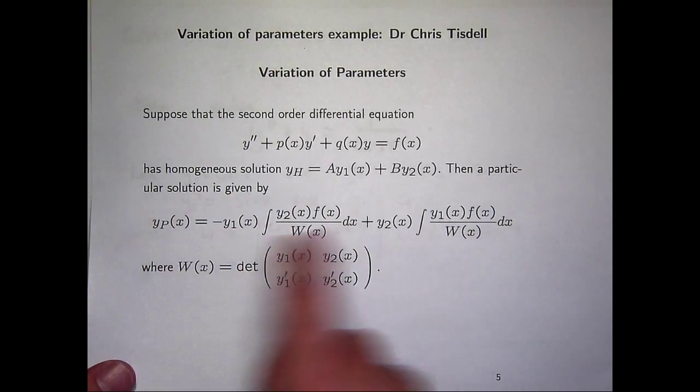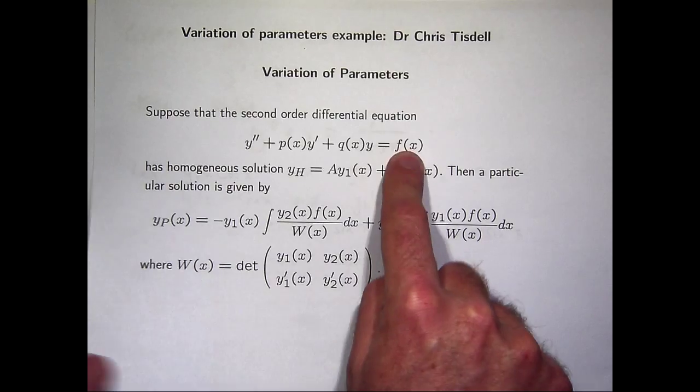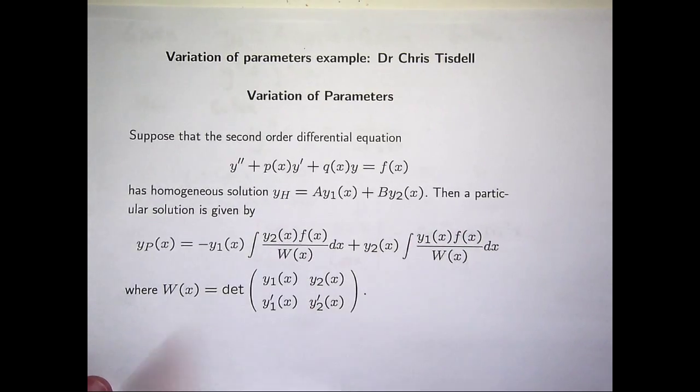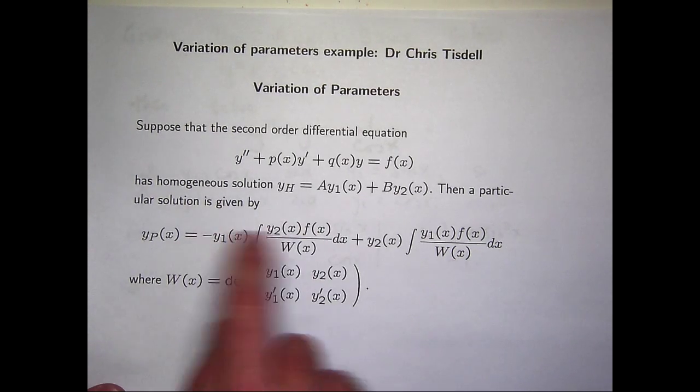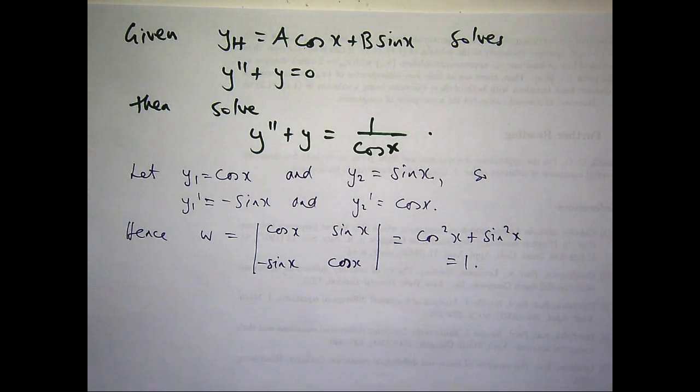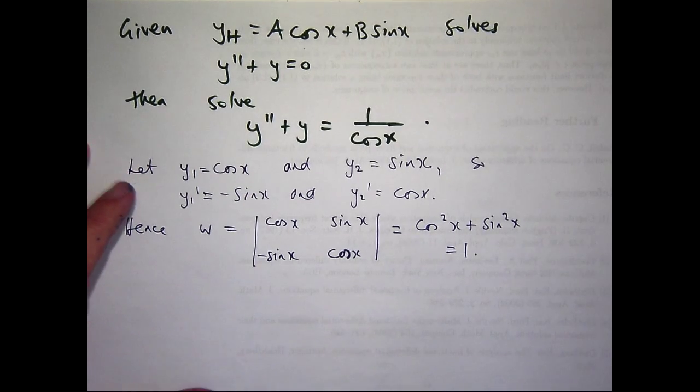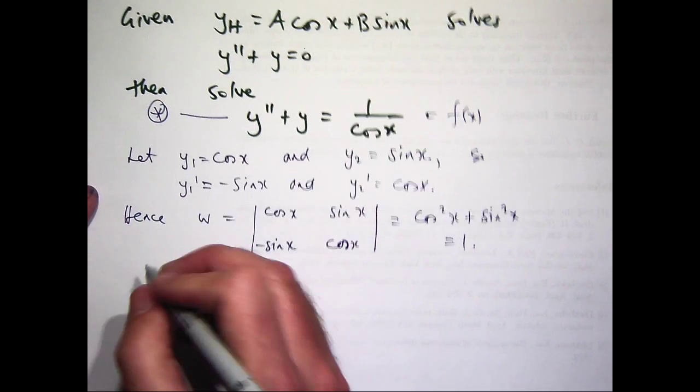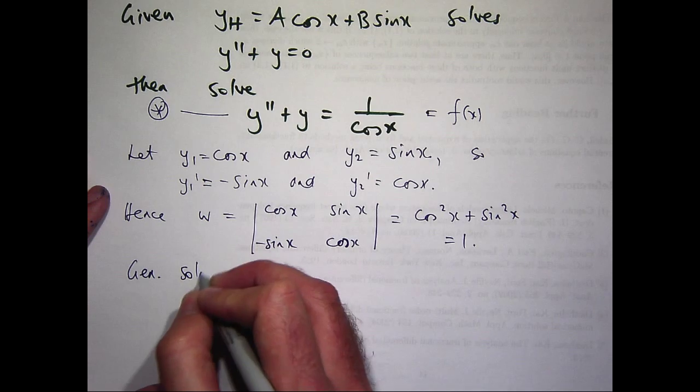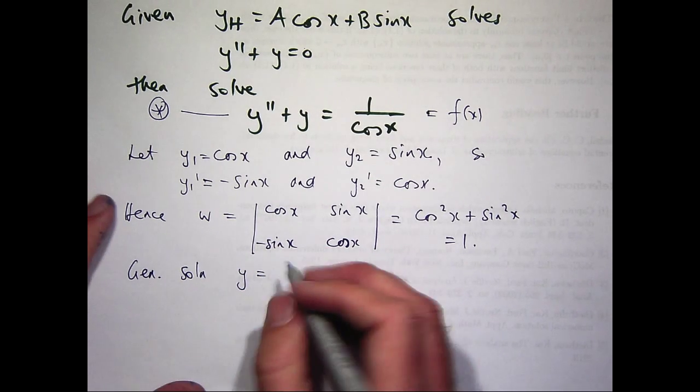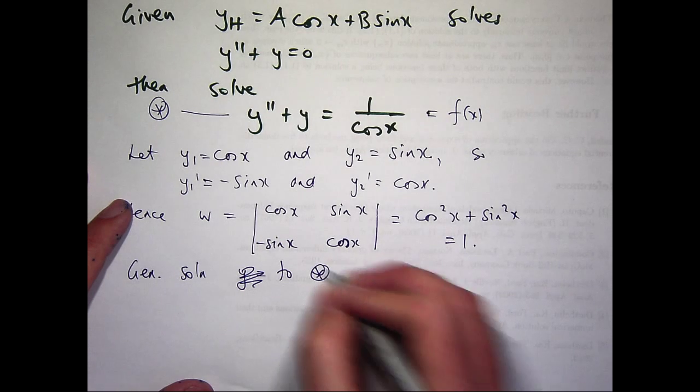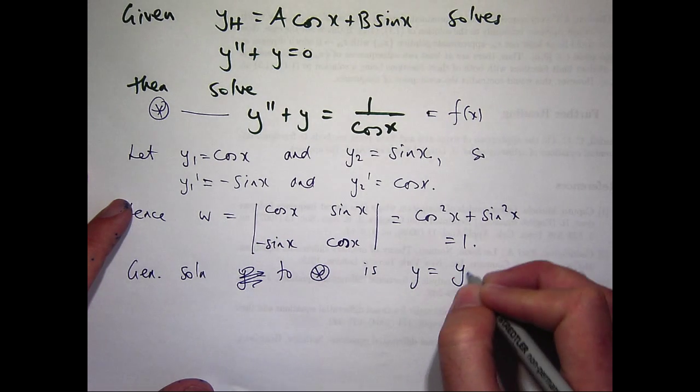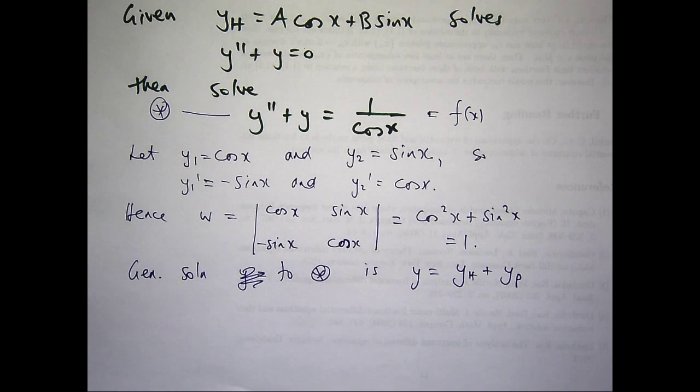So to build this solution, well, that's going to be one. My f of x, my right hand side, will be one on cosine x. So all I'm going to do is build these two parts individually. So the general solution is just the homogeneous solution plus a particular solution that we construct, y sub p.